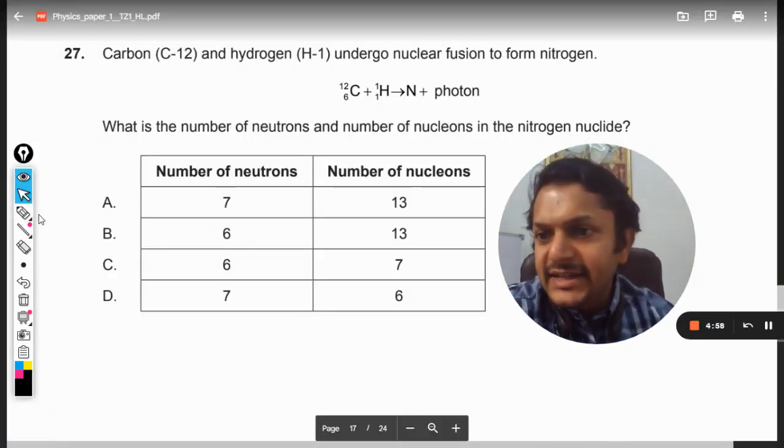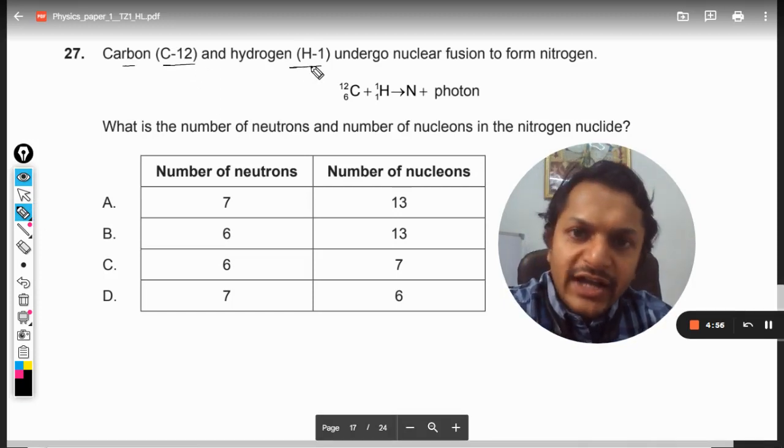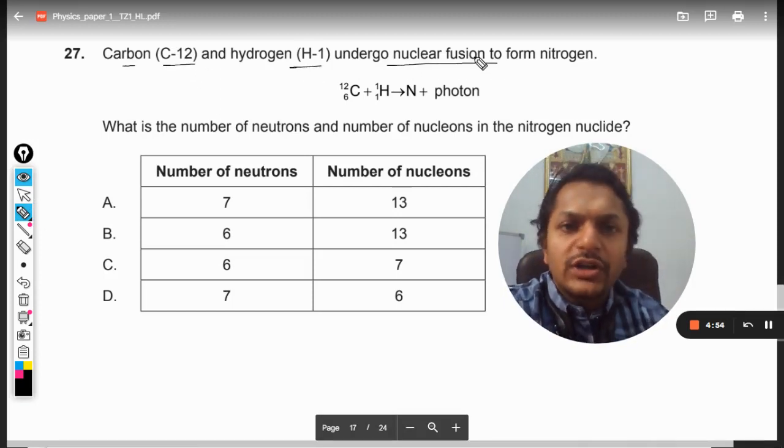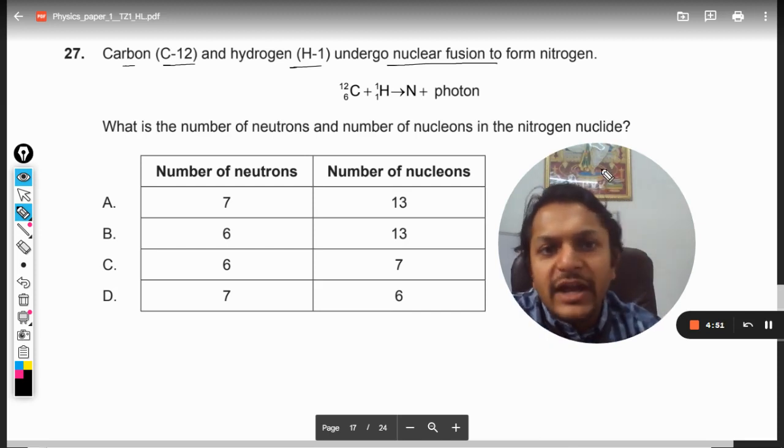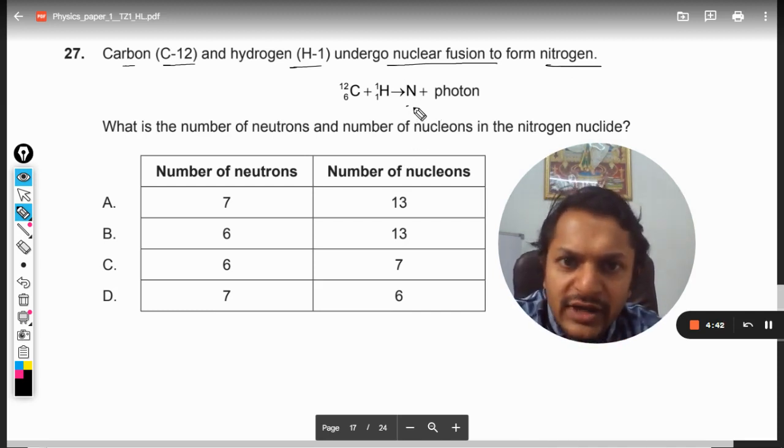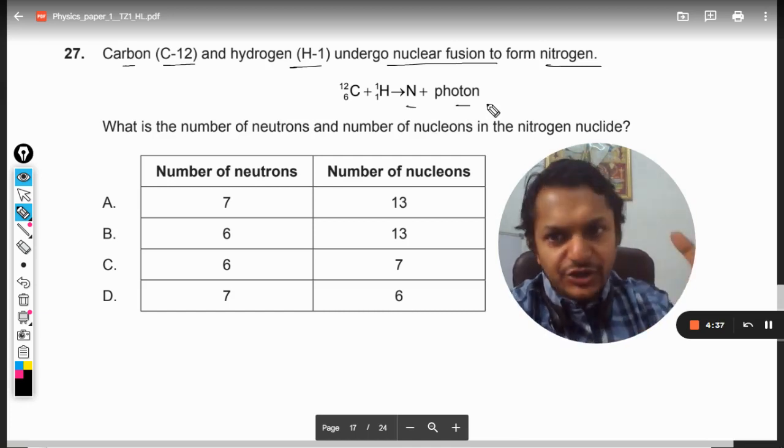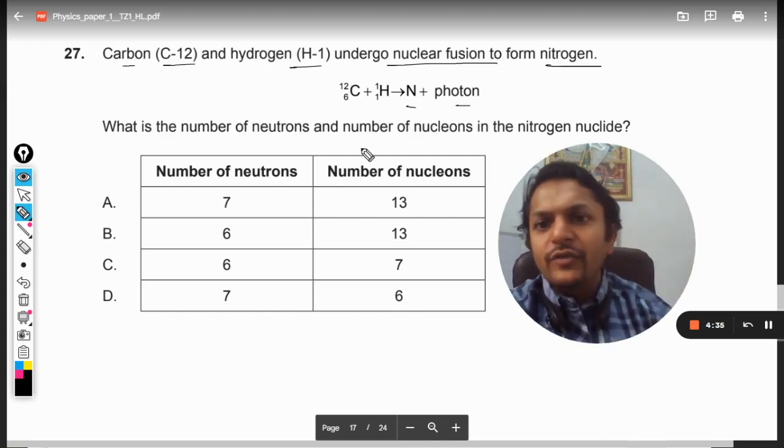Okay, dear students, let us see this question. Carbon C-12 and hydrogen H-1 undergo nuclear fusion to form nitrogen. The reaction is given and there is no subatomic particle shown here, no other particle is shown. Only nitrogen is shown, and energy is shown. Photon means energy.